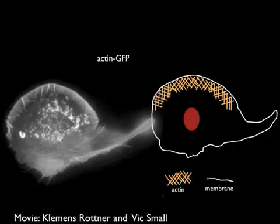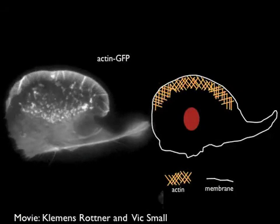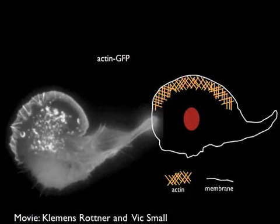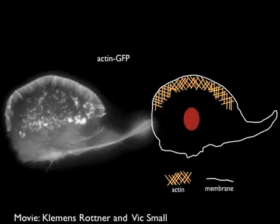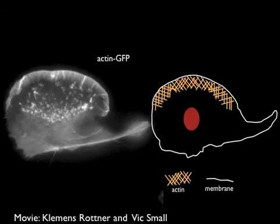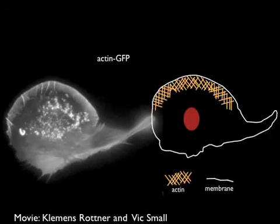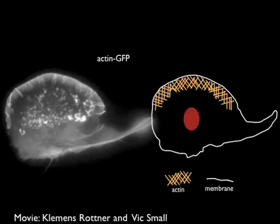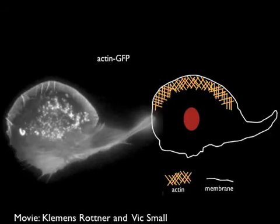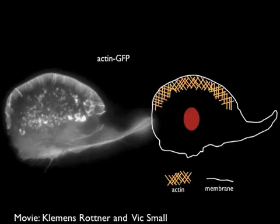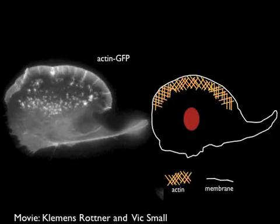We know that many cell types extend protrusions in the direction of movement. In these cells, it is often the ongoing polymerization of actin at the cell front that essentially pushes the cell membrane forward. Together with generation of traction and retraction of the back of the cell, this leads to net movement.